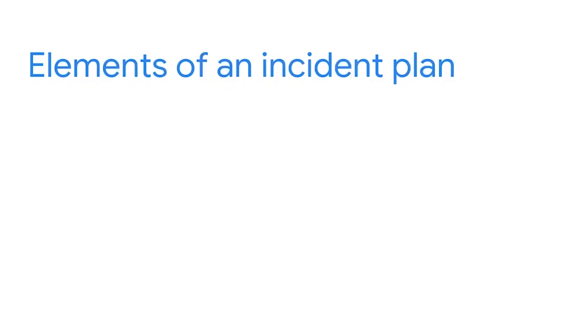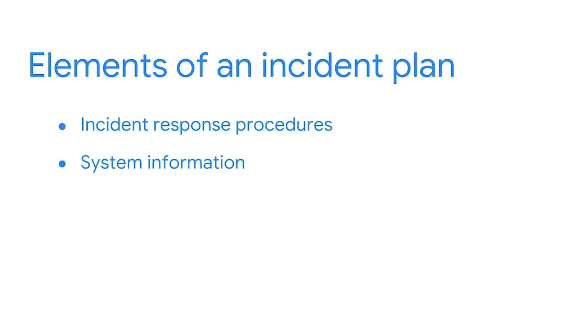For example, smaller organizations may choose to include their incident response plan in their security plan, while others may choose to have them as separate documents. Although not all incident plans are the same, there are common elements that they share. Incident plans have incident response procedures — step-by-step instructions on how to respond to incidents — system information such as network diagrams, data flow diagrams, logging, and asset inventory information, and other documents like contact lists, forms, and templates.